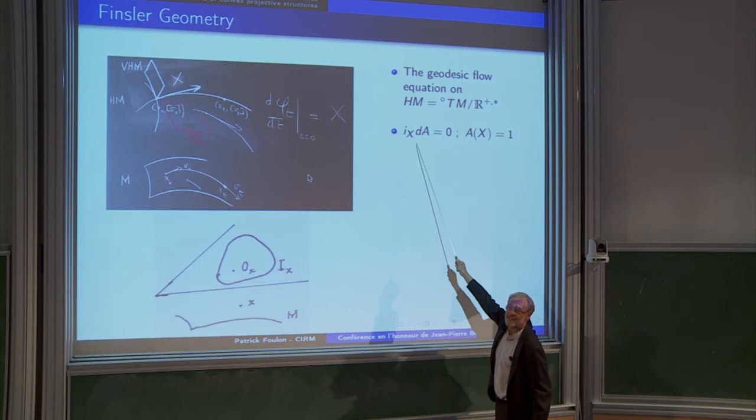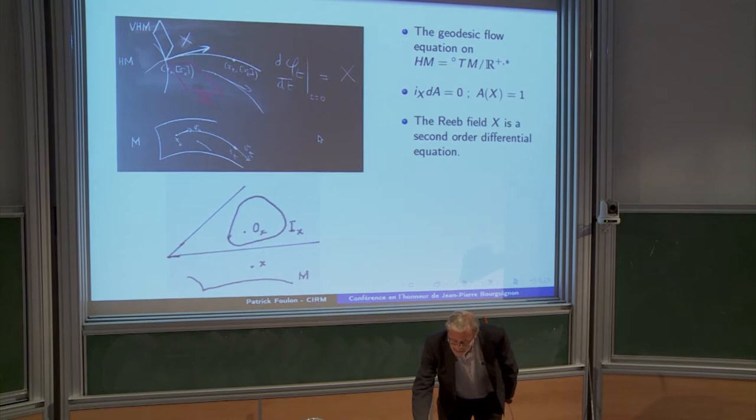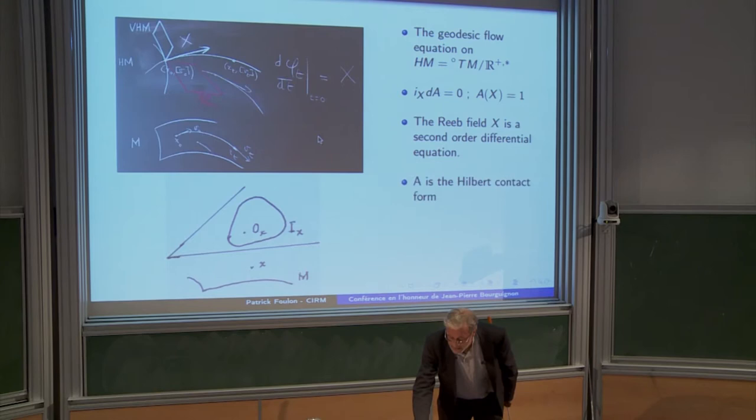The equation that was written this morning for geodesic equation is that you have a vector field which flows the geodesics above. This morning it was E, X was E. And A is now the contact form. So I'm in the smooth case but I will leave the smooth case soon. So X is a Reeb field, and A is a Hilbert contact form.